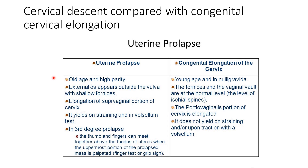In cervical descent, elongation of the supra-vaginal portion of the cervix is present. In congenital elongation, it is the vaginal portion of the cervix that is elongated, not the supra-vaginal part. Cervical descent yields on straining and on Valsalva test — it comes out further when asked to strain. Congenital elongation does not yield on straining or upward traction with Valsalva; it remains outside as it is and does not reduce.